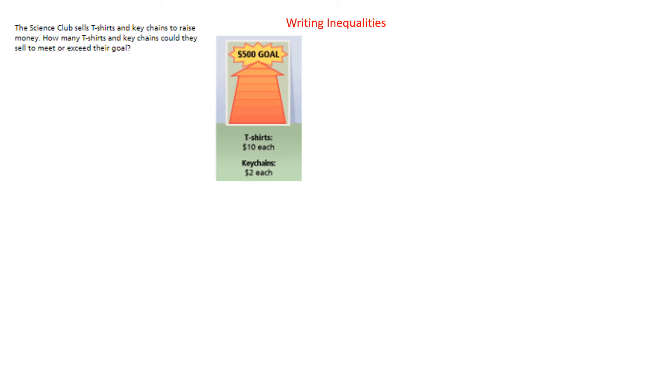Now, writing inequalities. We'll write some inequalities, sometimes from word problems. Here we have: the Science Club is selling t-shirts and keychains to raise money. How many t-shirts and keychains could they sell to meet or exceed their goal? T-shirts are $10, keychains are $2, and their goal is $500. So we're going to define some variables: let x equal the number of t-shirts sold, and y is the number of keychains. Then we can make an equation.